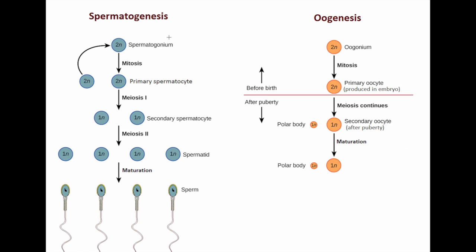In the initial phase, the cells of the gametes are called spermatogonium, which are 2N in number — remember that they are diploid. The spermatogonium undergoes a process called mitosis, through which we get equal numbers of daughter cells. There is only one mitosis, and that spermatogonium is going to convert into the primary spermatocyte.